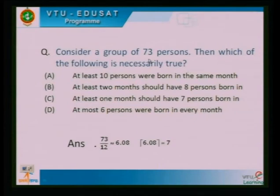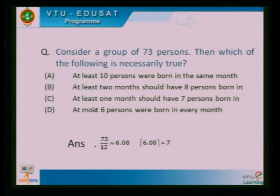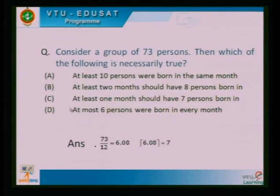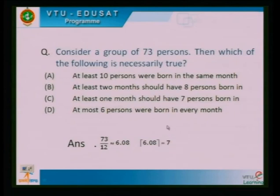Consider a group of 73 persons. Which of the following is necessarily true? Using the pigeonhole principle: there are 12 months in a year. Dividing 73 by 12 gives approximately 6.08. Applying the ceiling function, at least one month must have ⌈73/12⌉ = 7 persons born in it. So the correct answer is: at least one month should have 7 persons born in it.